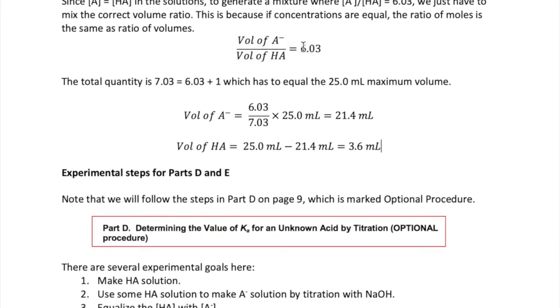So how do we use this information to make our buffer? The equation tells us that our buffer should have one part volume of HA with 6.03 parts volume of A minus for a total of 7.03 parts volume. Since our total volume is 25 milliliters,